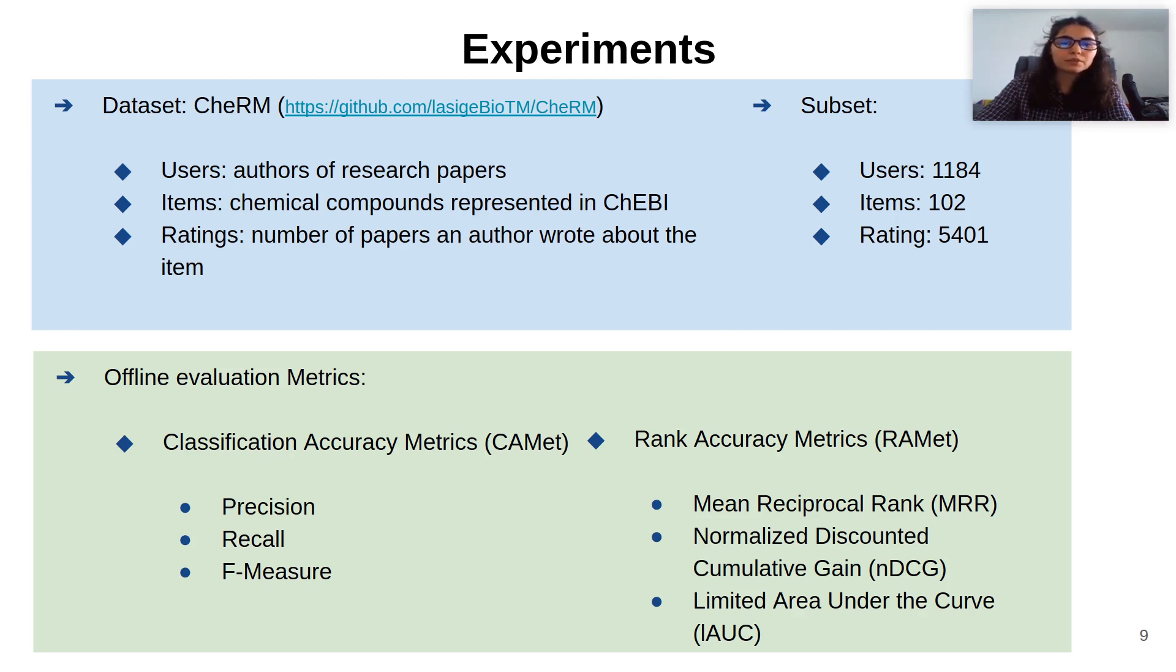And rank accuracy metrics such as mean reciprocal rank, normalized discounted cumulative gain, and limited area under the curve, which allow us to evaluate the ability of the algorithm for recommending the items in the correct order. This is, the most relevant should be in the first positions.